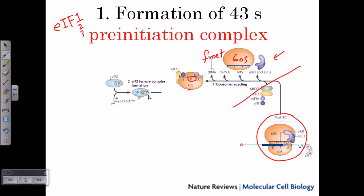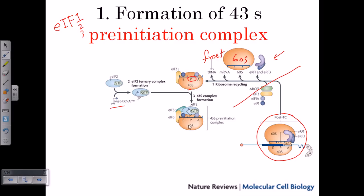Now, along with eIF2, the first tRNA — the fMet-tRNA — is brought in. eIF2, which is a GTPase protein, brings this fMet-tRNA to the ribosome and binds it to the P site. So now we have the 40S ribosomal subunit with the P site occupied by eIF2 and the tRNA. The E and A sites are blocked by eIF3 and eIF5.